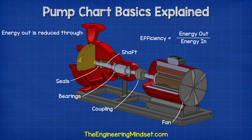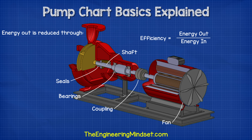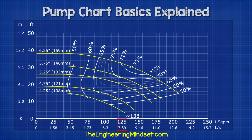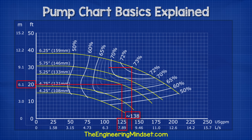The pump will always lose some power when it converts and transmits electrical energy into mechanical energy, and this will be lost through the couplings, the bearings, the shaft, the seals, the cooling fan, etc. For example, on this chart, we can see that if the pump provided 125 gallons per minute at 25 feet of head, then it would run at around 67% efficiency, which isn't very good. If the same pump operated at 30 feet of head for 138 gallons per minute, then it would operate at its peak performance of 73%, which is much better.